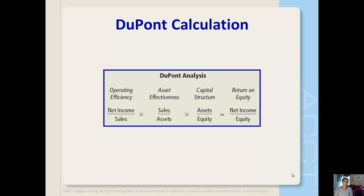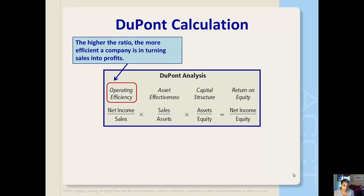The first component is a company's operating efficiency. It is calculated as net income divided by sales, which is also known as the profit margin ratio. This component reveals a company's ability to turn sales into profits. The higher the ratio, the more efficient a company is in turning sales into profits.